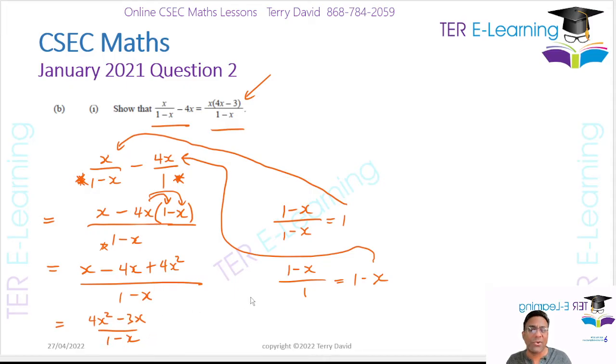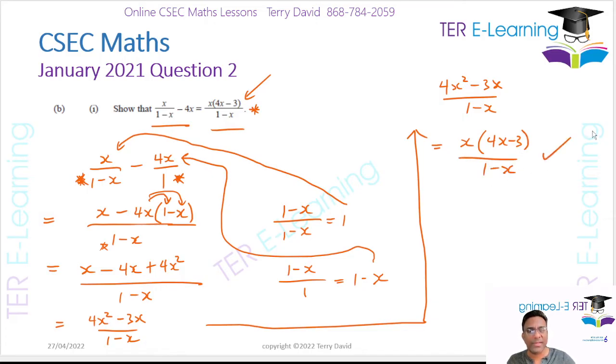All over 1 minus x. But the answer still doesn't look like what they want. So I have 4x² minus 3x all over 1 minus x. So all I need to do here is to factorize the top. If I pull out x, I'm going to end up with x(4x minus 3) all over 1 minus x. So now I have proven what they asked me to do. So my left-hand side is now equal to my right-hand side.